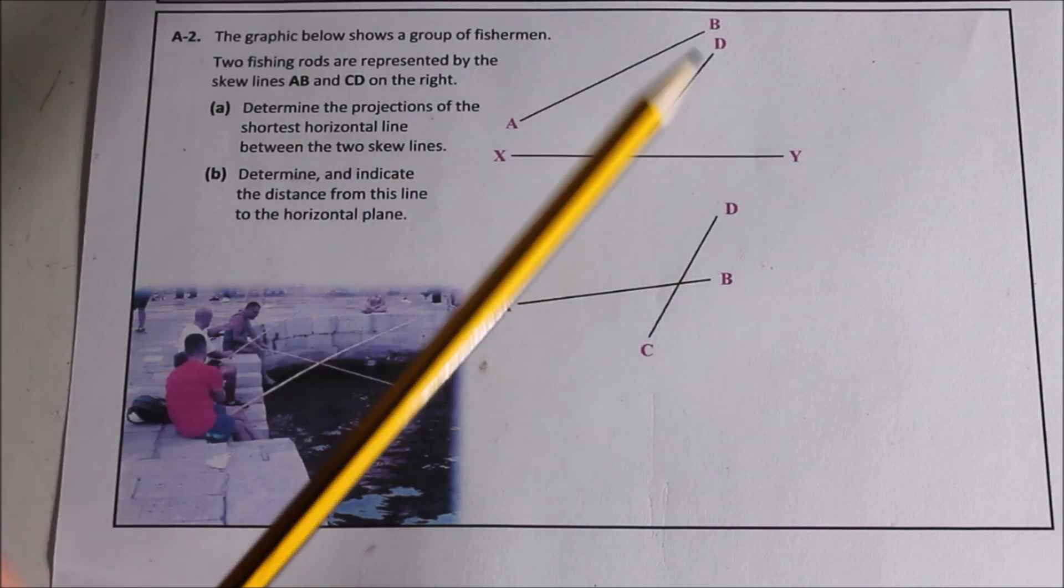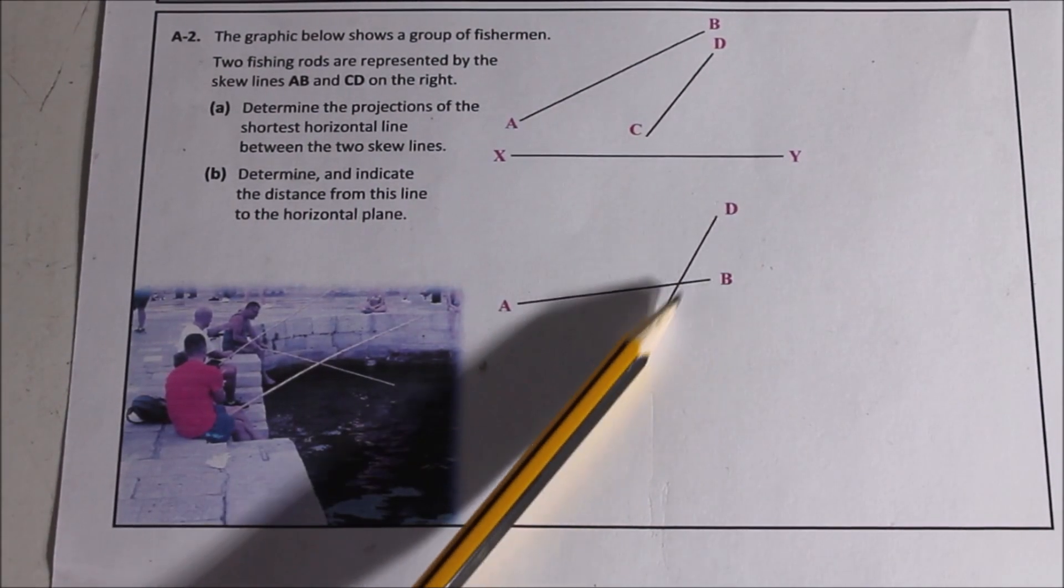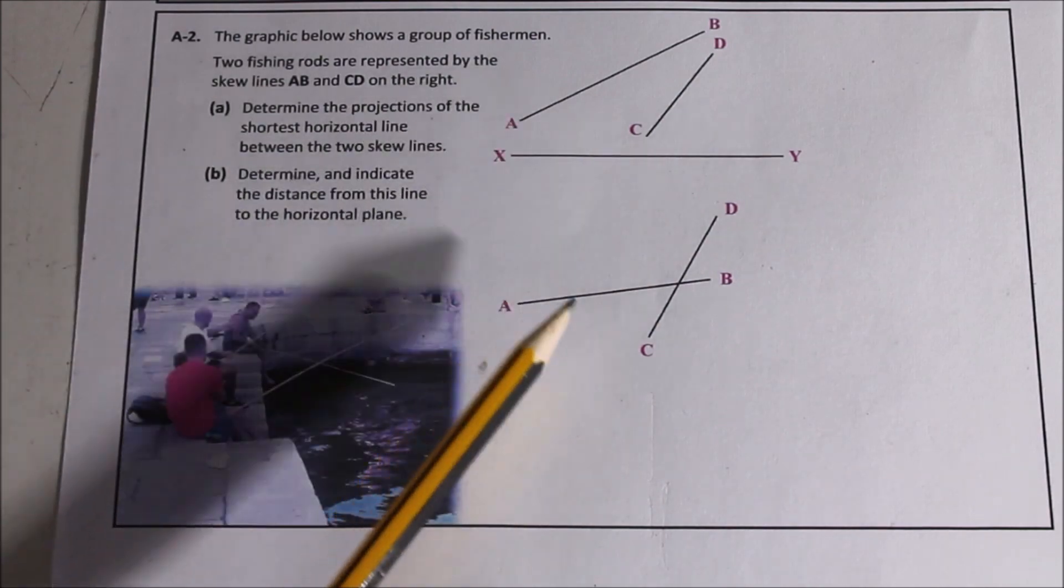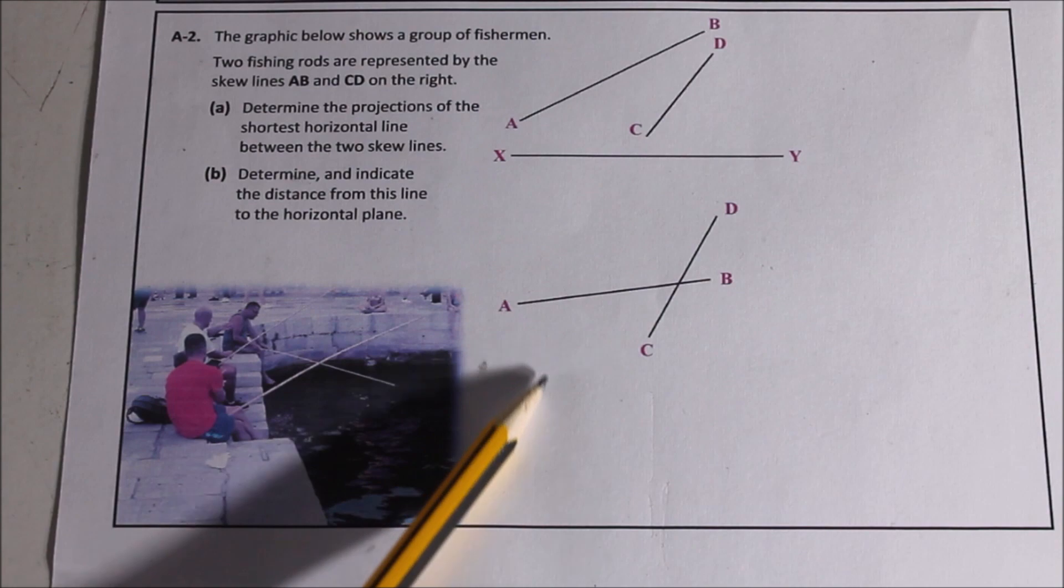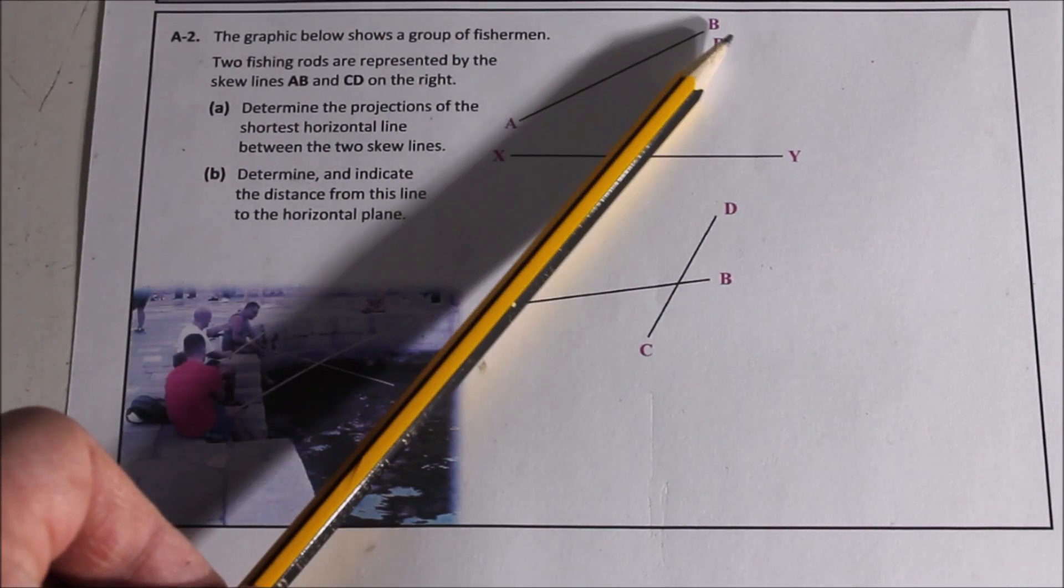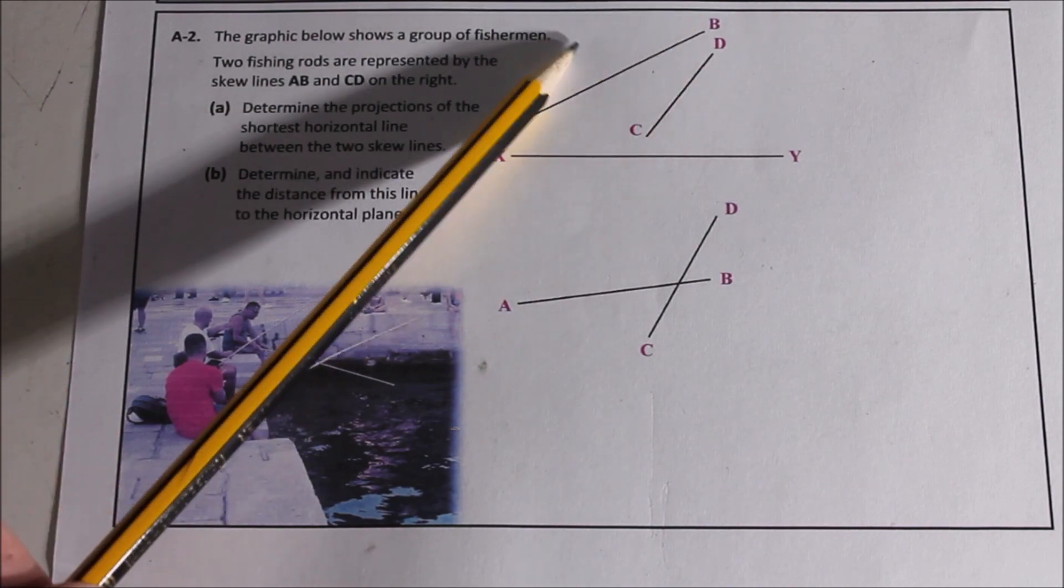You have to bring CD to B, bring it down here, bring that point down, and it will eventually meet it. But then our true length line is going straight down here. So let's try the other way around. Let's try CD to A, bring it up. Bring B horizontally across.